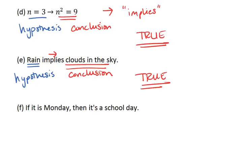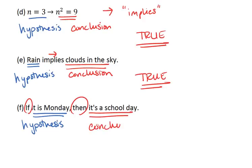Lastly, we have if it is Monday, then it's a school day. We see the return of our if-then structure. It is Monday is our hypothesis, and it's a school day is our conclusion. So we assume our hypothesis to be true, that it is Monday. Does this mean it must be a school day?